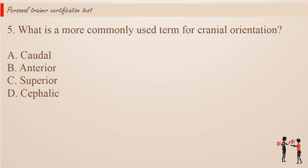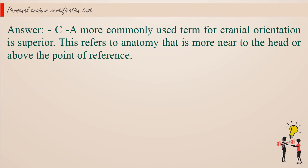Question 5. What is a more commonly used term for cranial orientation? a. Caudal. b. Anterior. c. Superior. d. Cephalic. Answer: c. A more commonly used term for cranial orientation is superior. This refers to anatomy that is more near to the head or above the point of reference.